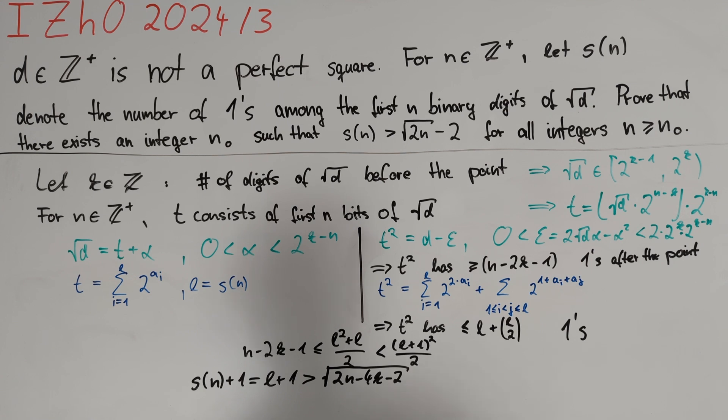If we choose n large enough, which we are allowed by taking a suitable n₀, then this will be greater than the square root of square root 2n minus 1 all squared, which is simply equal to square root of 2n minus 1.